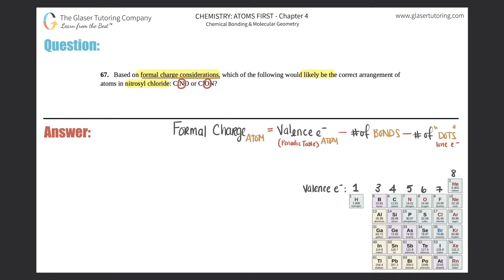And do you guys remember what the basically the number one rule is for picking your central atom? Remember, the central atom, the one in the middle, should always be the least electronegative.